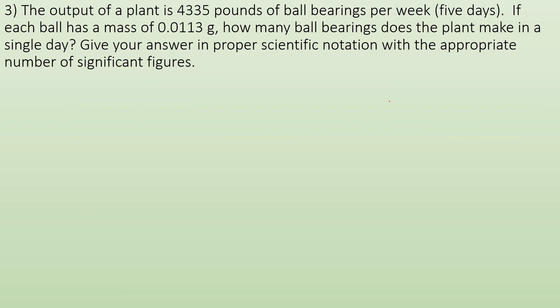Alright. Third problem. The output of a plant is like a production plant, like a factory, is 43.35 pounds of ball bearings per week, which is a five-day work week. If each ball has a mass of 0.0113 grams, how many ball bearings does the plant make in a single day? Give your answer in proper scientific notation with the appropriate number of sig figs. So first step, what am I trying to get? I'm trying to get ball bearings per day. And they tell me how many ball bearings or how many pounds I got in a week. So that's how I'm going to start.